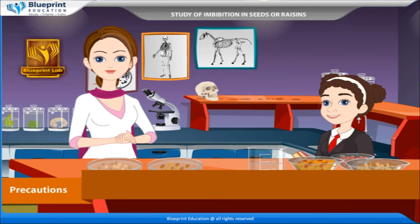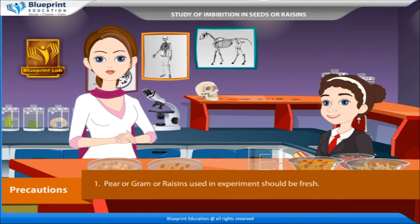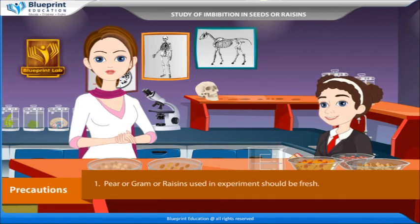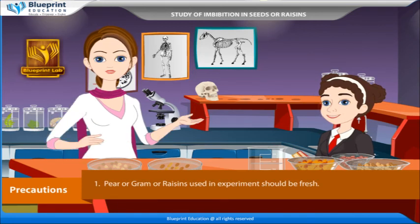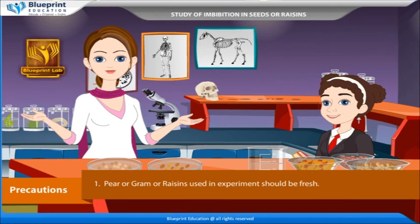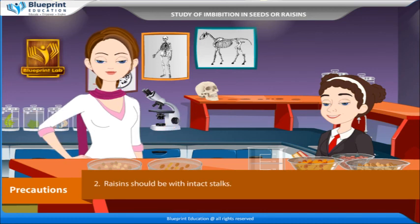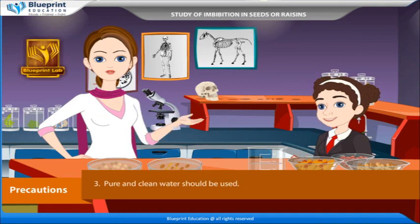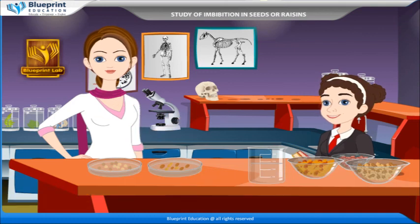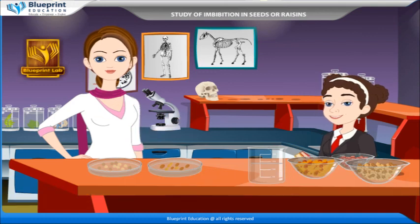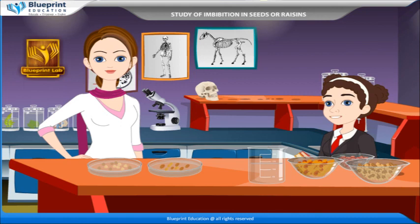Precautions: Peas, gram, or raisins used in the experiment should be fresh. Raisins should be with intact stalks. Pure and clean water should be used. Thank you, ma'am, for this knowledgeable experiment.